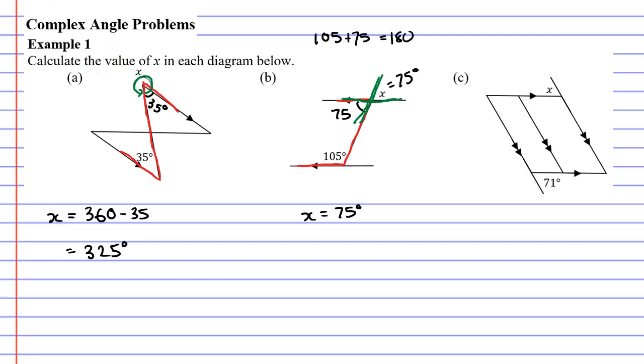Now, moving on to question C, I'm just having a quick look to see if there are any f, z, or c shapes. I can see an f-shape like so, which tells me that the angle on the top left corner is a 71 degree angle.